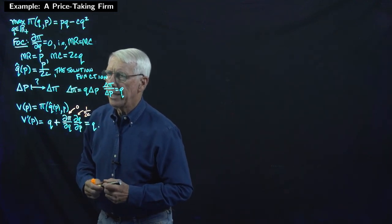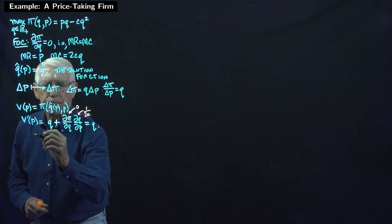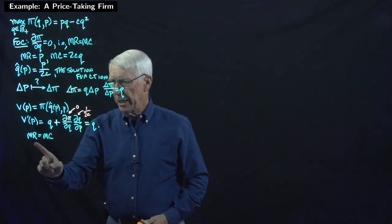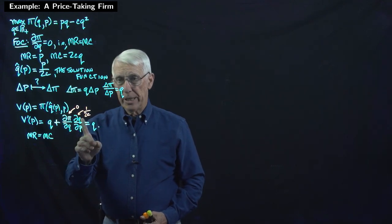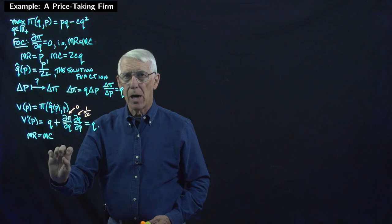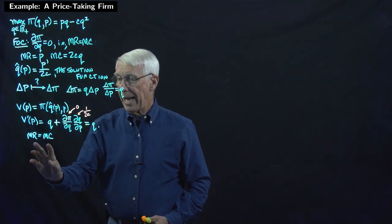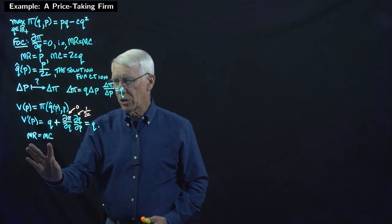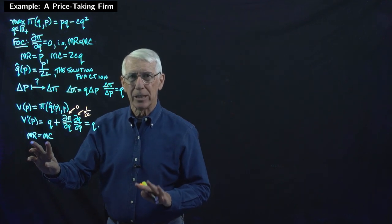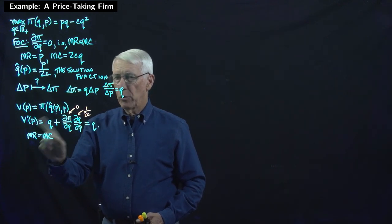Notice that if we have marginal revenue equal to marginal cost at the optimum, then when we change the quantity in response to the change in price — by 1 over 2C — the change in revenue and the change in cost almost exactly offset one another. Since at the optimal quantity marginal revenue equals marginal cost, this is another way of seeing that this indirect term drops out in the derivative.